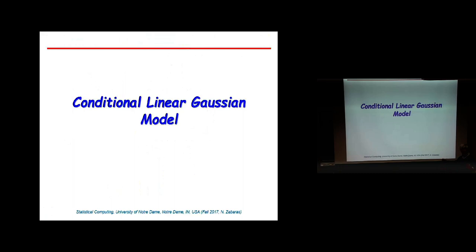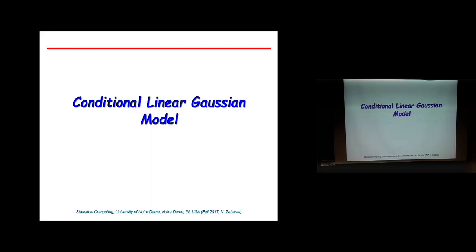Done with the linear Gaussian model. Now I want to go to an application of sequential Monte Carlo where the Kalman filtering equations will be very handy. It's too bad we don't have anyone in the audience working on robotics or tracking problems, because this is where these ideas are used extensively. I'm going to describe what a conditional linear Gaussian model is — you can also take a fluid mechanics problem with dynamics and make the equations look like a conditional linear Gaussian model.